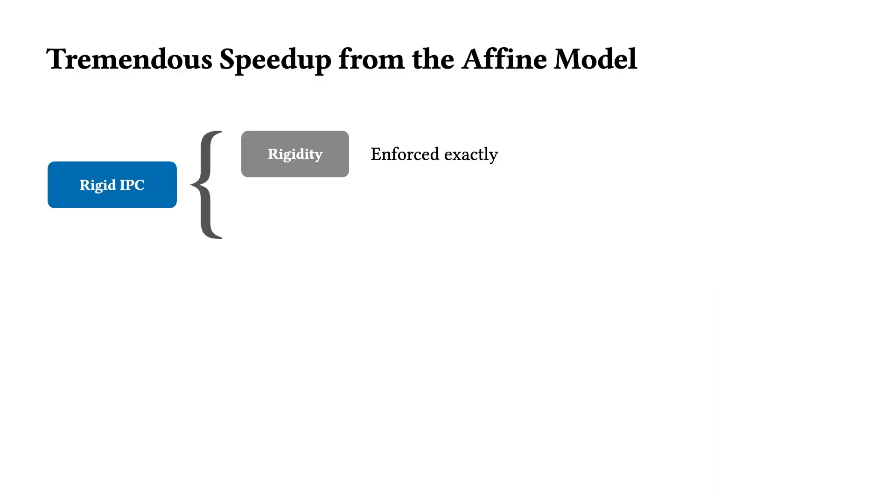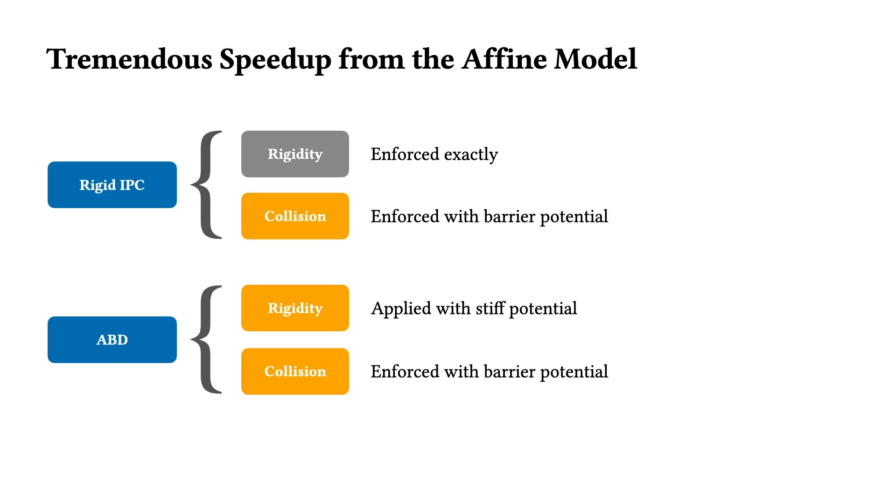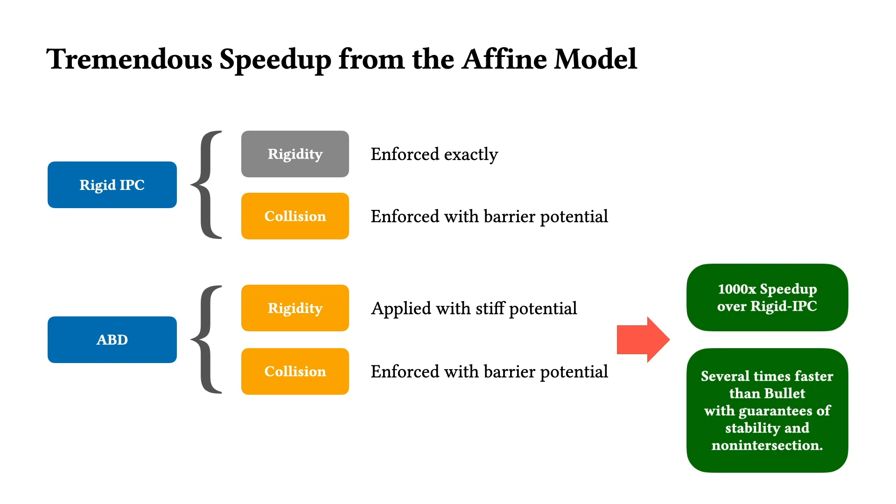While rigidIPC and other traditional rigid body methods treat stiff materials by enforcing rigid motion, ABD instead applies compact affine coordinates with stiff rigidity potential. When combined with barrier potentials for contact handling, this choice ensures that trajectories are piecewise linear.